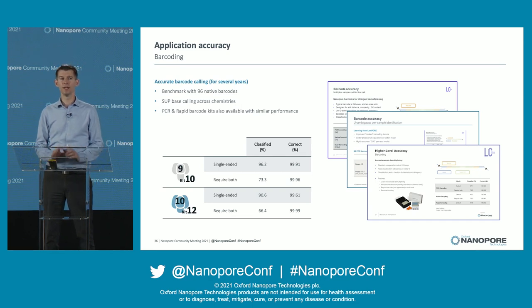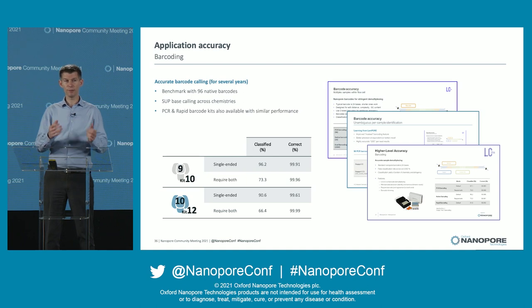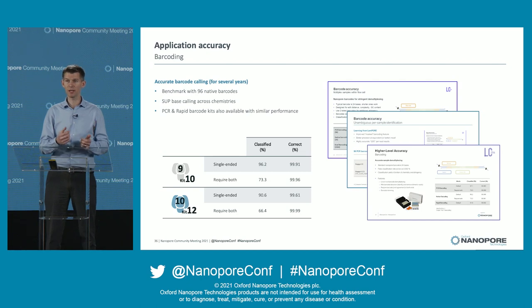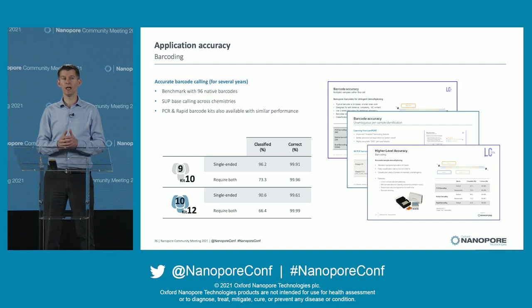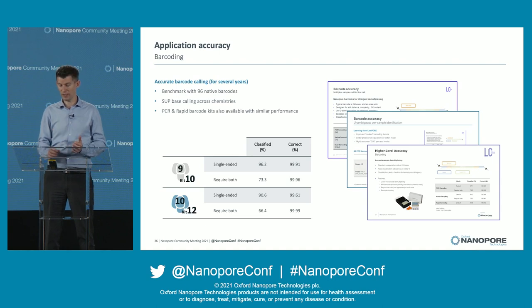Barcoding: Nanopore barcoding is accurate and has been accurate for several years now — with the previous chemistry and with the new chemistry. If you're looking for single-ended barcodes just on the leader adapter, you can recover over 90% of your data with highly specific correct answers. If you're willing to look for barcodes on both ends, which many of our chemistries produce, you can get up to 99.99% of those barcodes correct — very, very accurate.